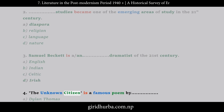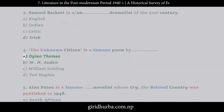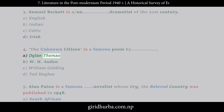Question 4: The Unknown Citizen is a famous poem by — A. Dylan Thomas. B. W.H. Auden. C. William Golding. D. Ted Hughes.